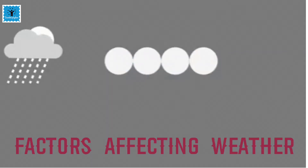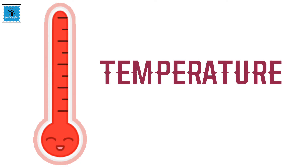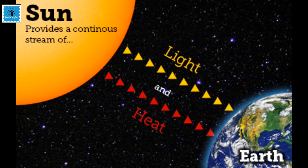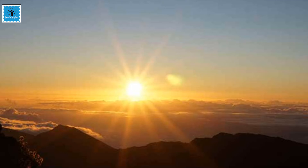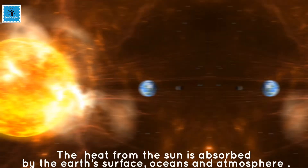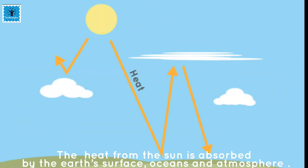The first element of weather is temperature. The sun is the ultimate source of energy and provides light as well as heat on the earth, which is very necessary for the production of energy. Weather is mainly affected by the sun because it produces heat and increases the temperature. The heat from the sun is absorbed by the earth's surface, oceans, and atmosphere, which play a very important role in determining the weather of any place.